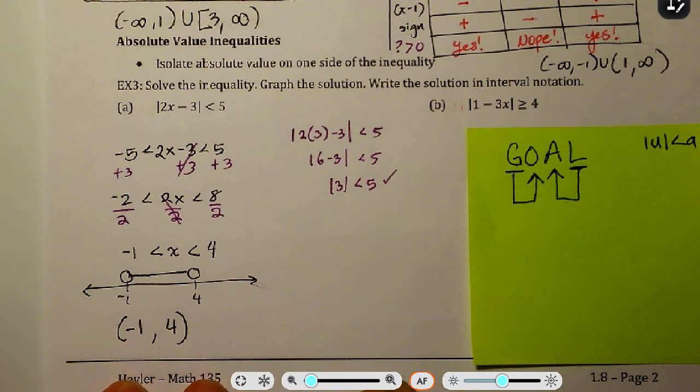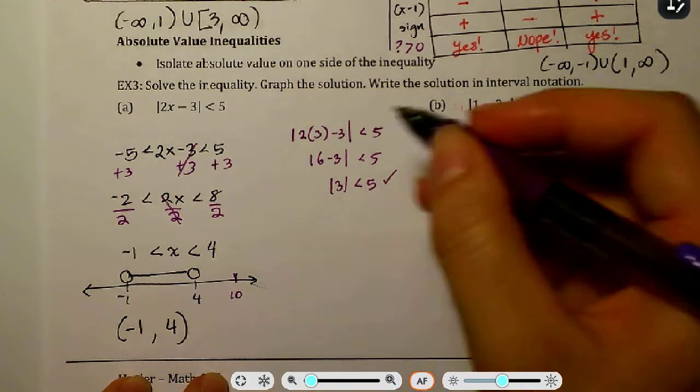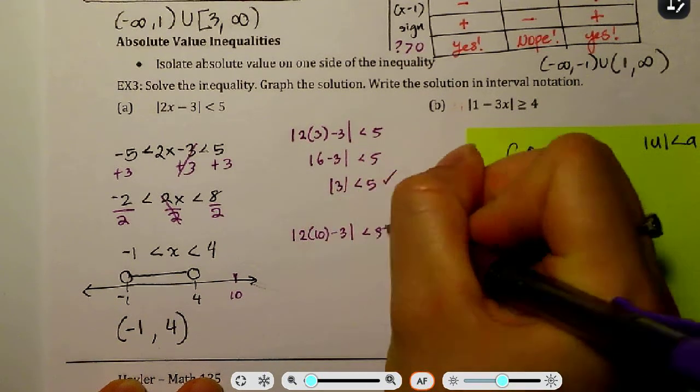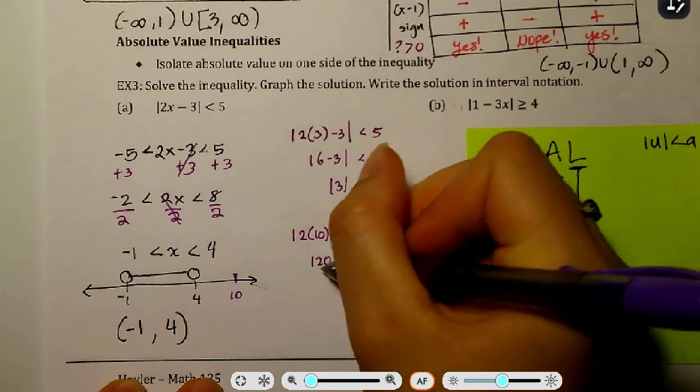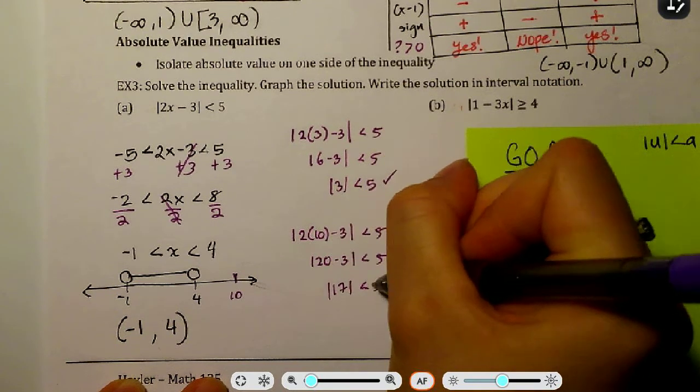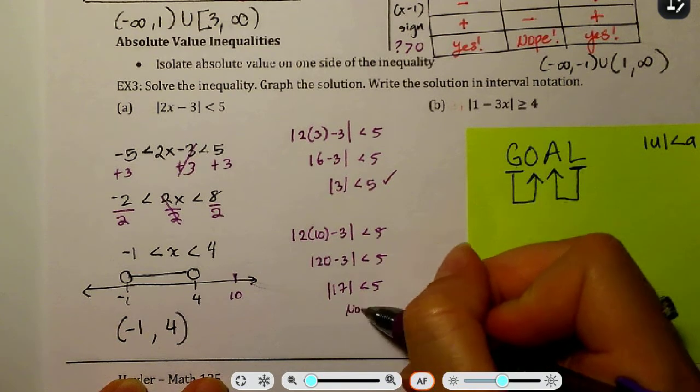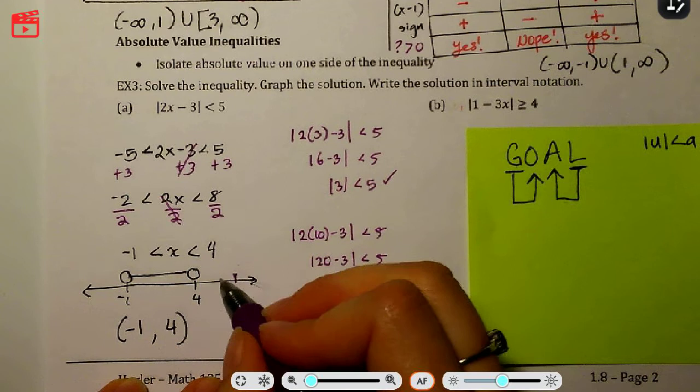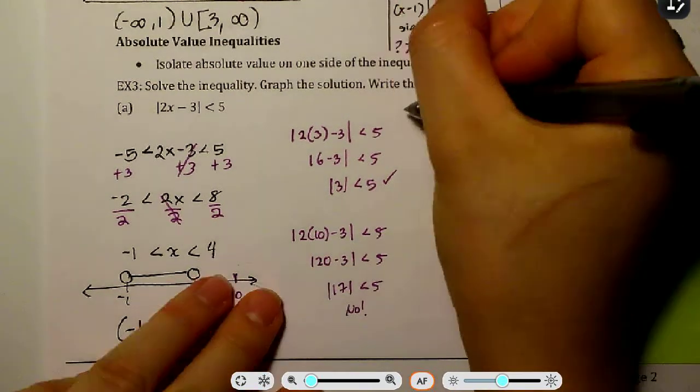Let's pick a value that is not in our interval. Let's say let's pick 10. Okay, so plugging that in, 2 times 10 minus 3. 2 times 10 is 20, minus 3. 20 minus 3 is going to be 17. Is the absolute value of 17 less than 5? No. So that didn't work, and that makes sense because it is outside of my answer interval. Okay, good. So our answer looks like it checks out.